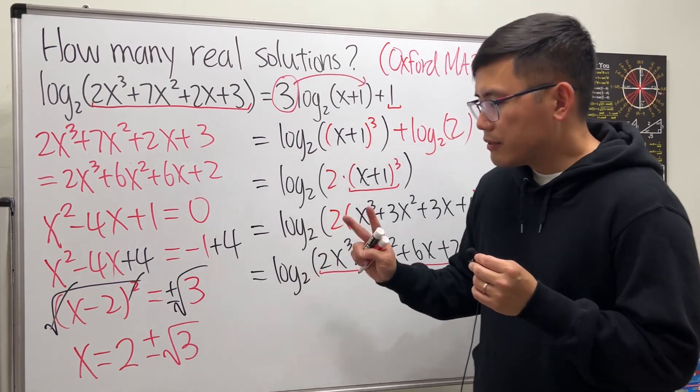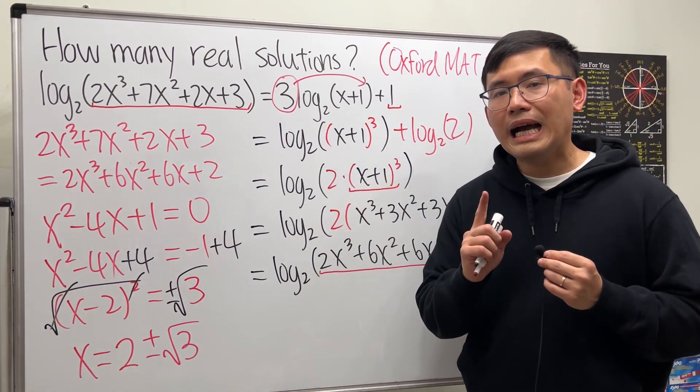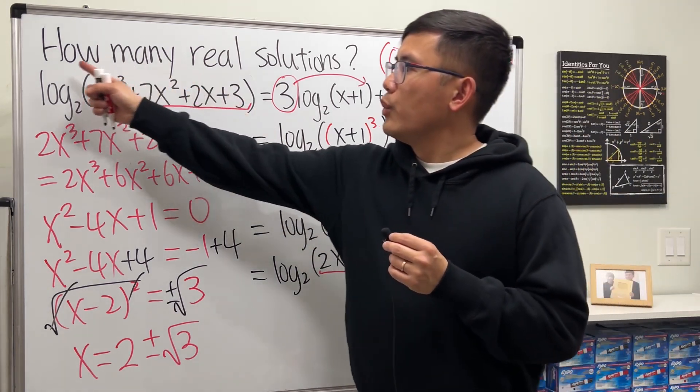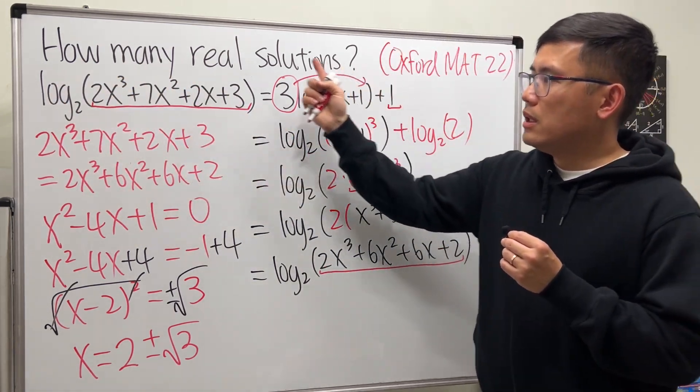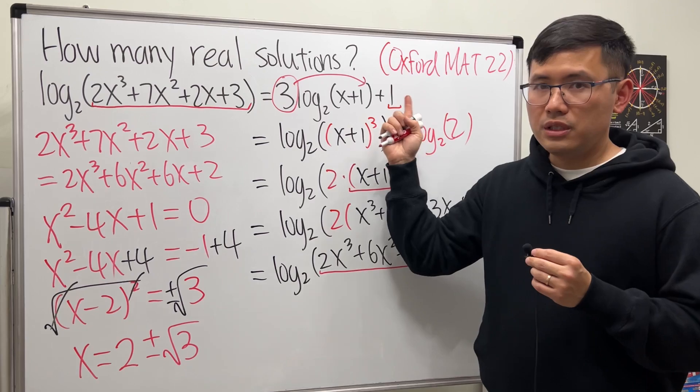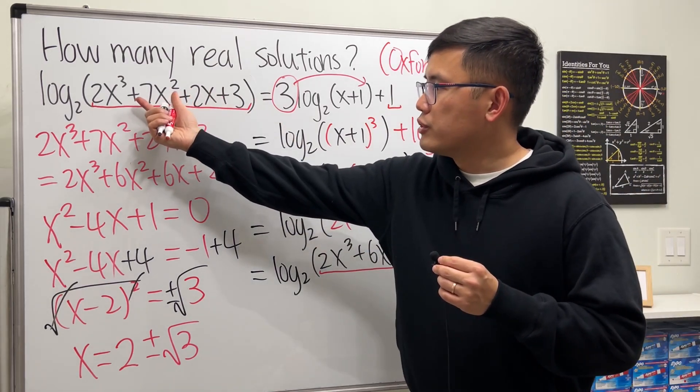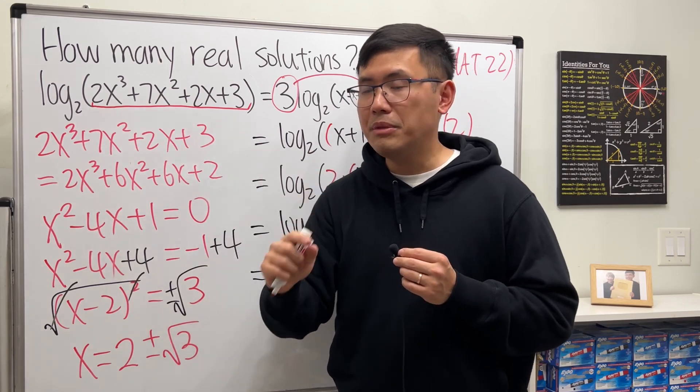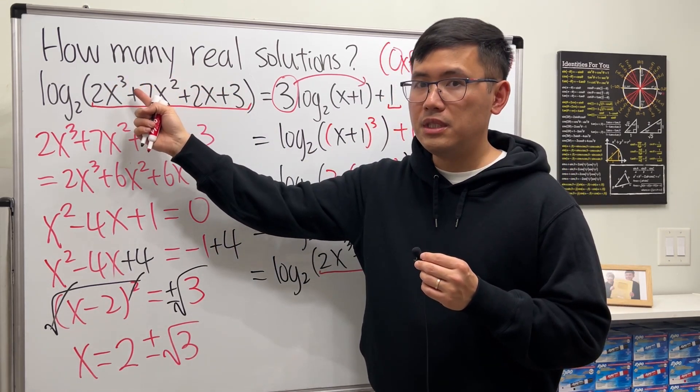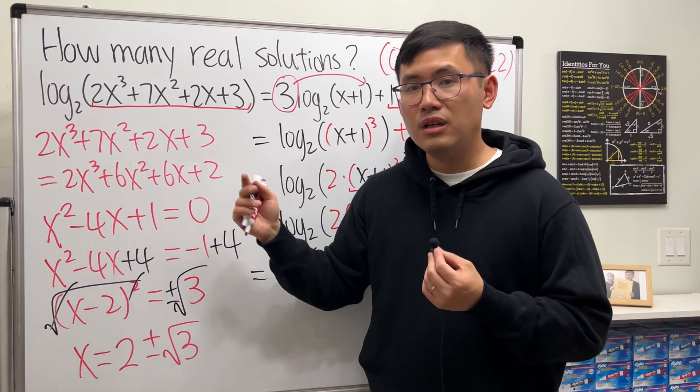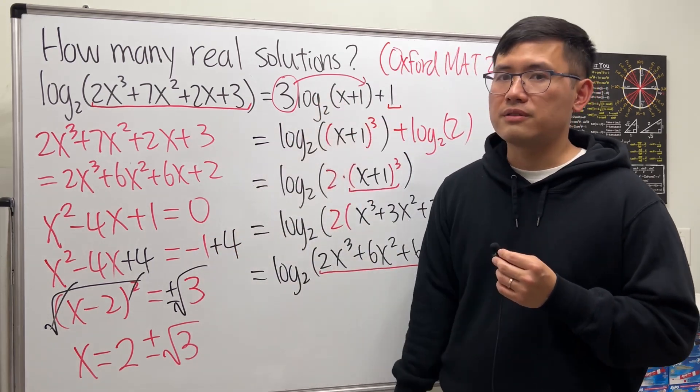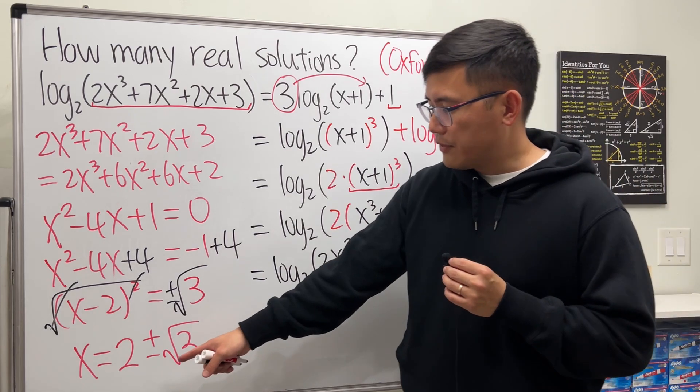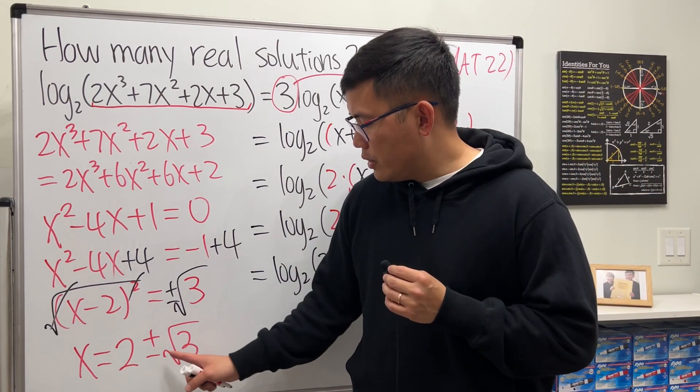So now it looks like we have two solutions to this, right? But we have to be careful. Why? Because we have to pay attention to how the equation is written originally. This expression is inside of log base 2, so that means we have to make sure that this part has to be greater than 0, otherwise you end up with complex values which is not okay.